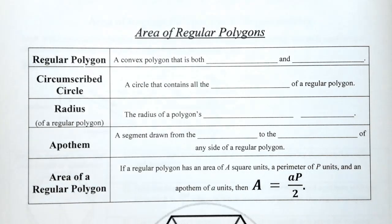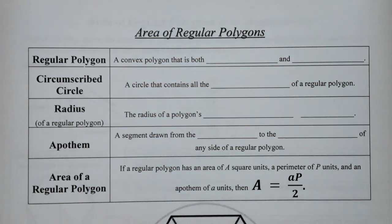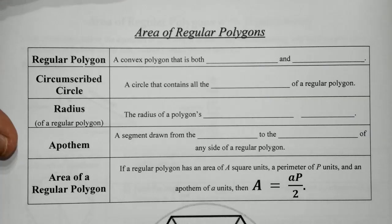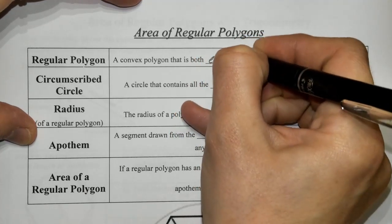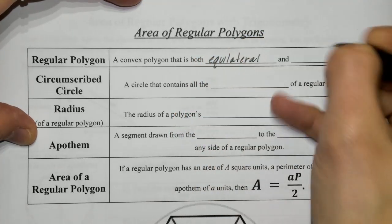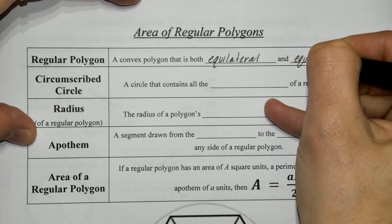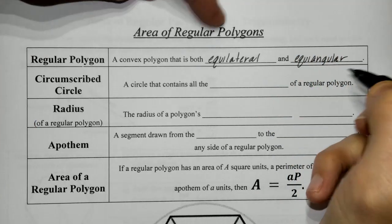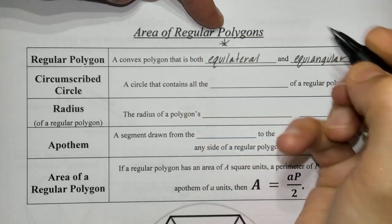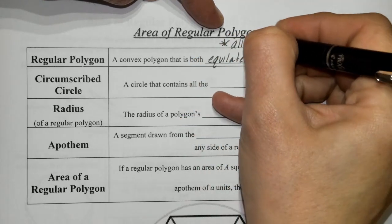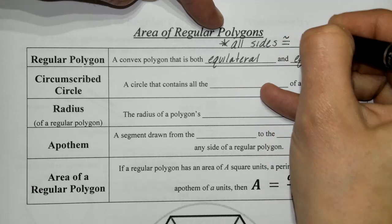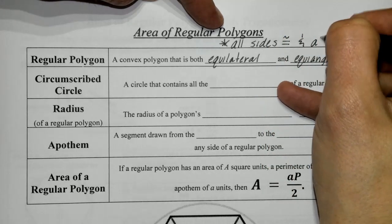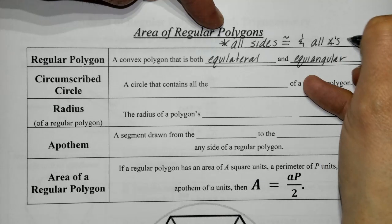Alright, so this video is going to be on area of regular polygons. A regular polygon is defined as a convex polygon that is both equilateral and equiangular. Equilateral means all sides are congruent, and equiangular means all angles are congruent.